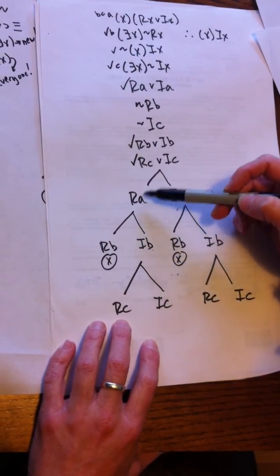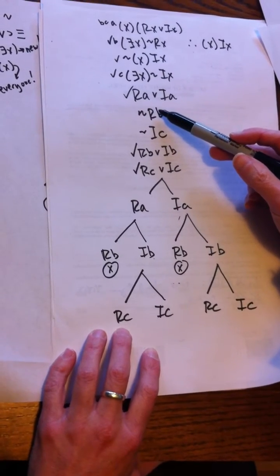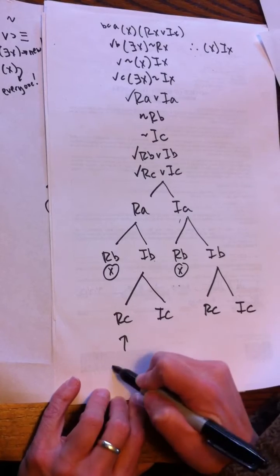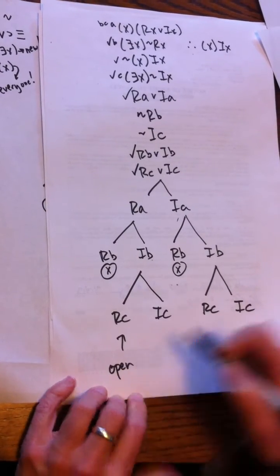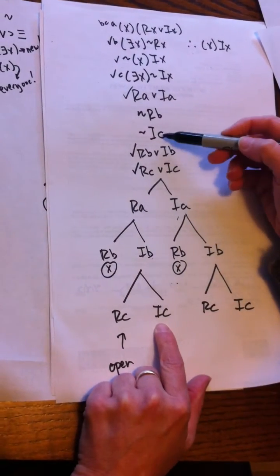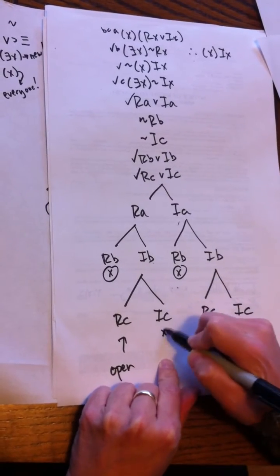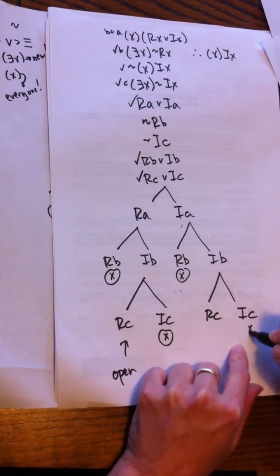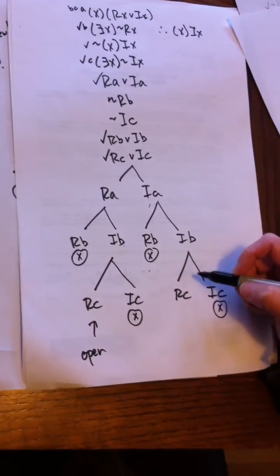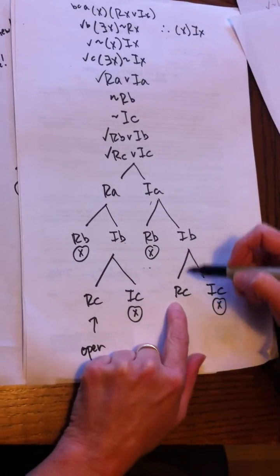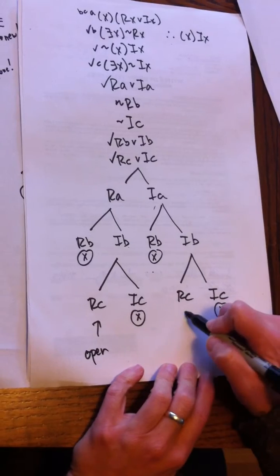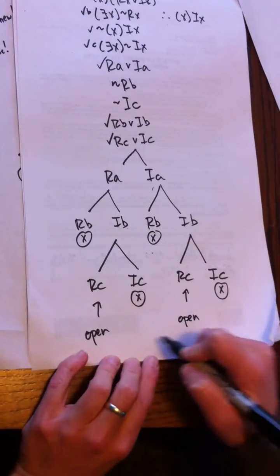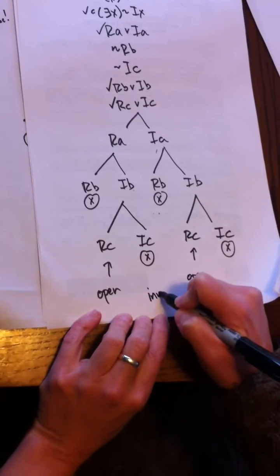And this path is open: Rc, Ib, Ra, Ic, Rb, tilde Rb—sorry, so that one's open, so I already know it's invalid. But I'll finish it out: the Ic and the tilde Ic cross out, the Ic and the tilde Ic cross out here. All right, and this path is again open, so we got open paths, so it's invalid.